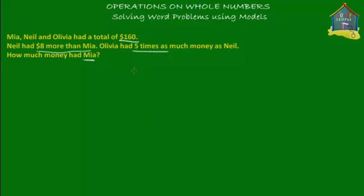Let's draw a model for the amount of money that Mia has got. Let's say that this block here, this box, represents the sum of money that Mia has.